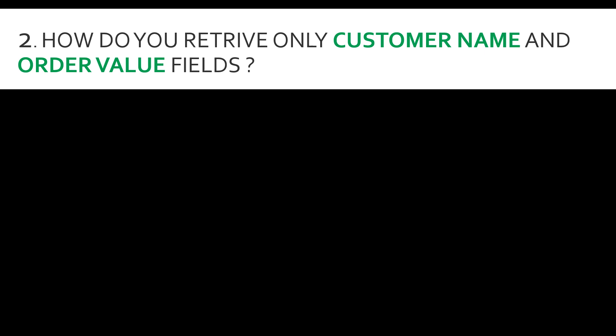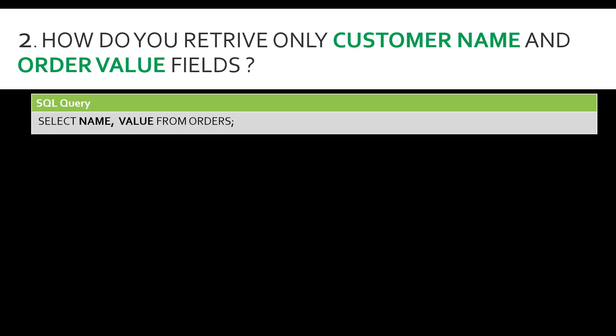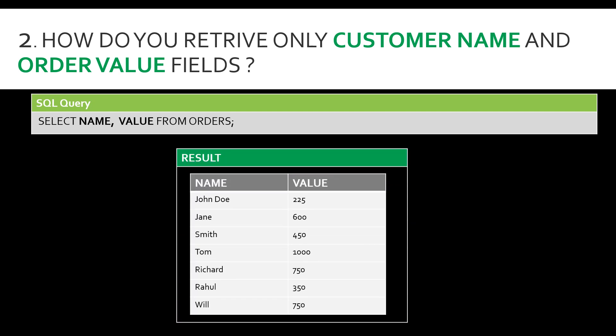Question number two: how do you retrieve only the customer name and order value fields? SELECT * displayed all fields, but now the interviewer is checking your knowledge on retrieving specific fields. The SQL query is SELECT name, value FROM orders. The result will have only two columns — customer name and order value — which helps focus the analysis when you're looking for only certain fields.